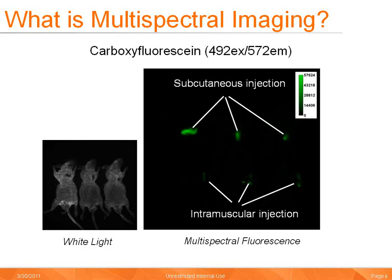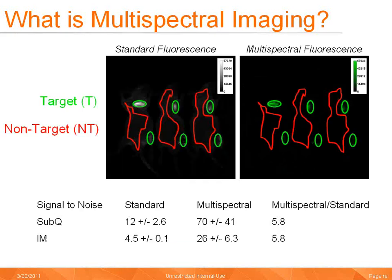Here we will use imaging of a green fluorophore to illustrate the first utility of multispectral imaging. Carboxyfluorescein, which has a peak excitation of 492 and emission of 572, was administered both subcutaneously and intramuscularly. The image to the left is a white light image showing the layout of the sample, and the image to the right is the multispectral fluorescent image. The sample was imaged using standard single-filter excitation and single-filter emission imaging, and intensity analysis was performed for both target and non-target regions reported as a ratio. Comparing signal-to-noise ratios, we achieved an almost 6x gain in signal-to-noise with multispectral imaging, which translates into improved overall sensitivity.